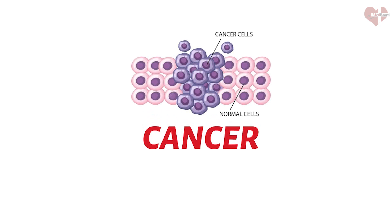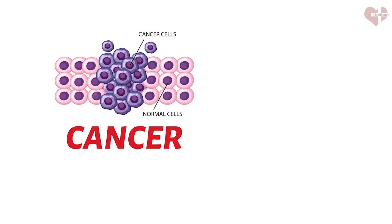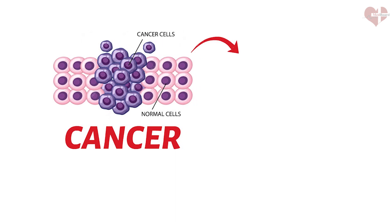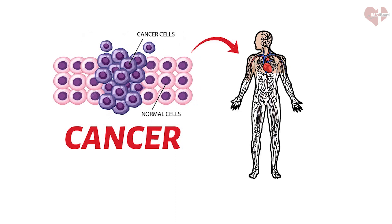Cancer starts when cells in the body begin to grow out of control. Cells in nearly any part of the body can become cancer cells and can then spread to other areas of the body.